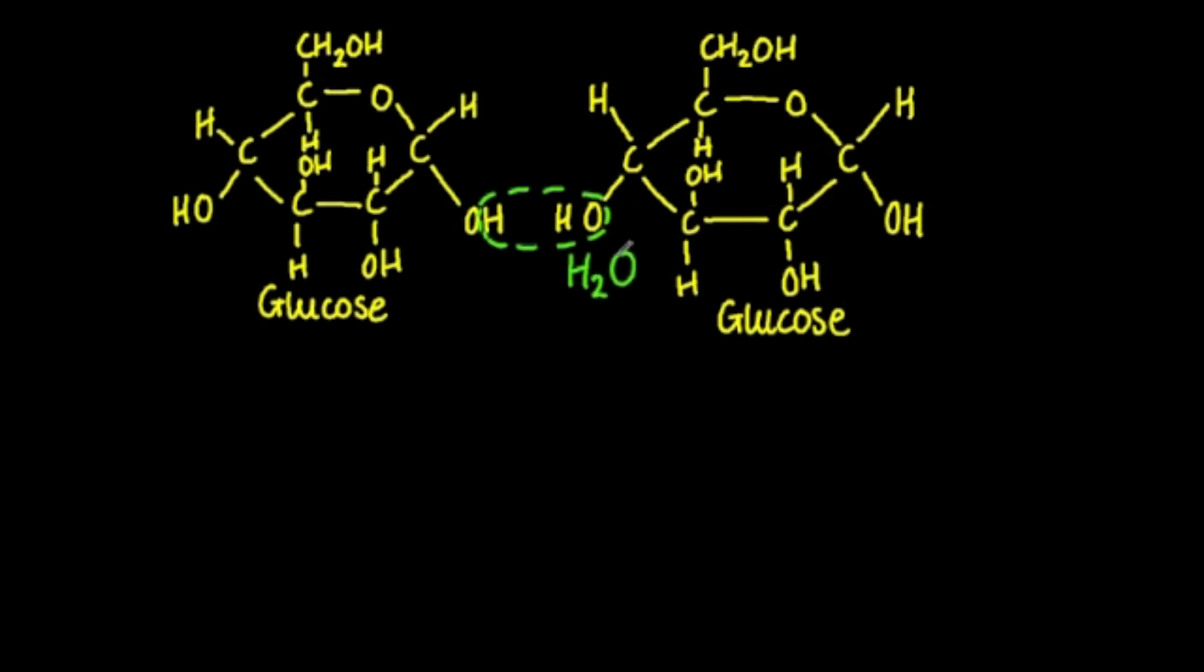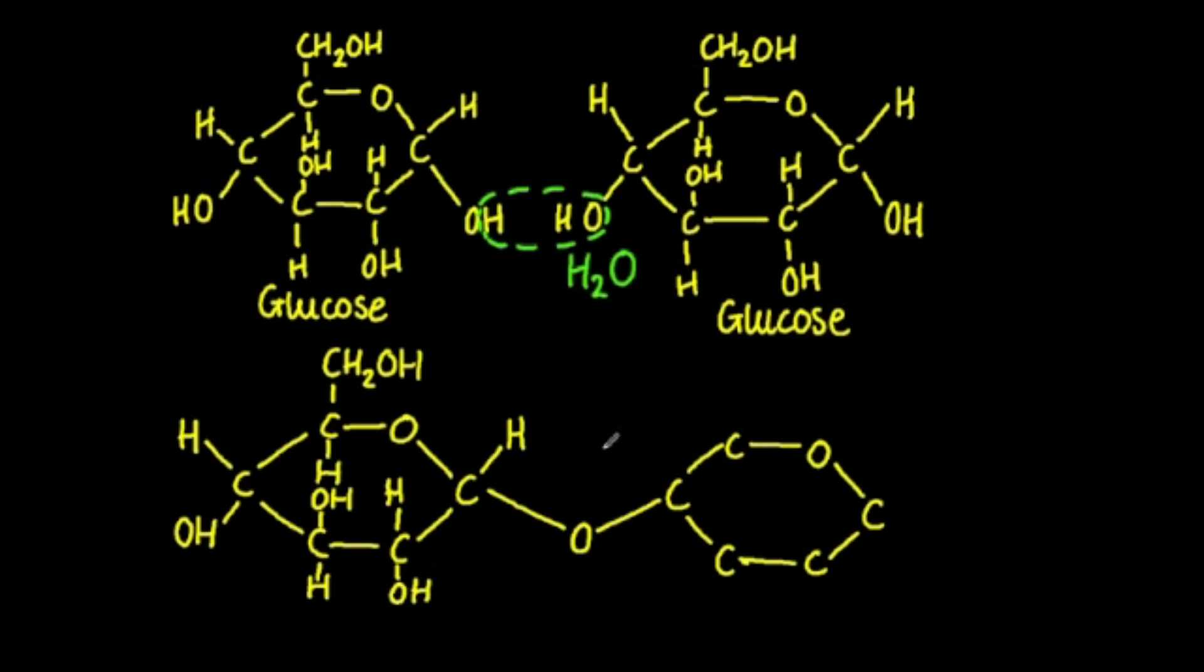Joining them together would form a molecule of maltose and this is a disaccharide. The two glucose molecules in formation of the maltose molecule gives us a glycosidic bond which I've labeled right here.